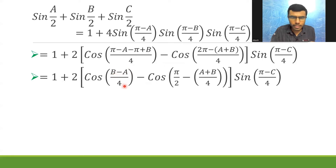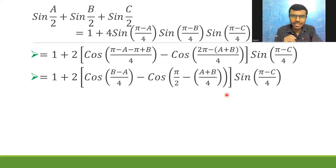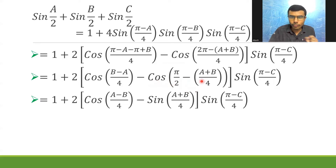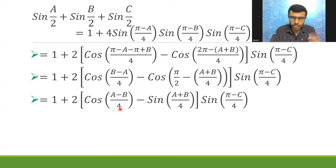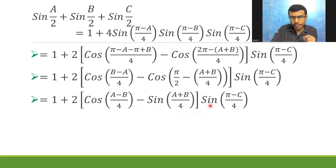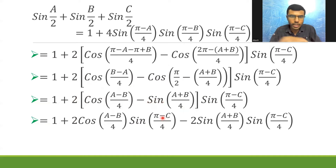Now cos((b−a)/4) can be written as cos((a−b)/4) because cos(−θ) = cos θ. And cos(π/2 − θ) = sin θ, so I have sin((a+b)/4) here. Taking minus common gives minus(a−b)/4, and since cos(−θ) = cos θ, this is what I have. Now I'm going to multiply sin((π−c)/4) and the factor of 2 to both terms, leaving me with: 1 plus 2·cos((a−b)/4)·sin((π−c)/4) minus 2·sin((a+b)/4)·sin((π−c)/4).